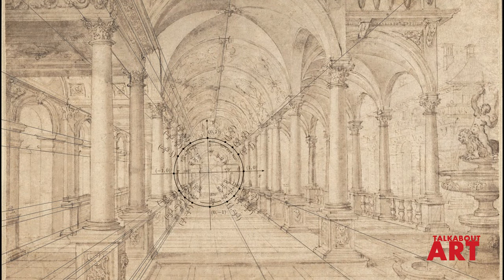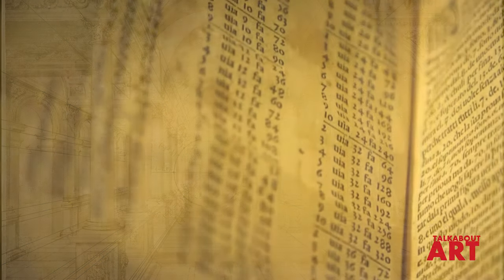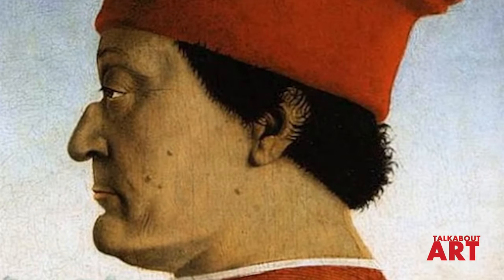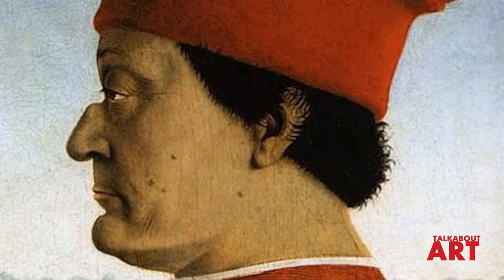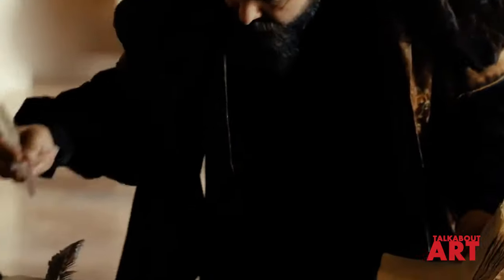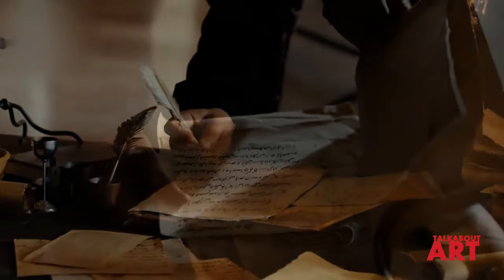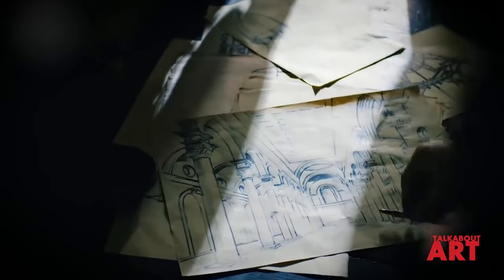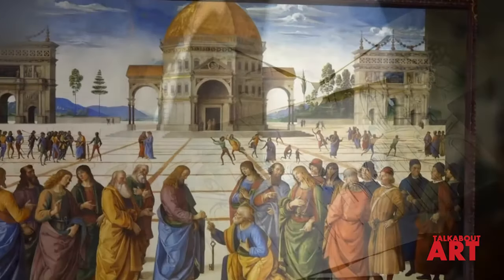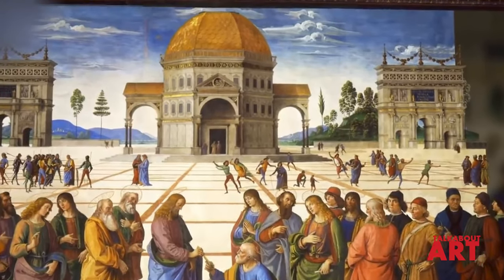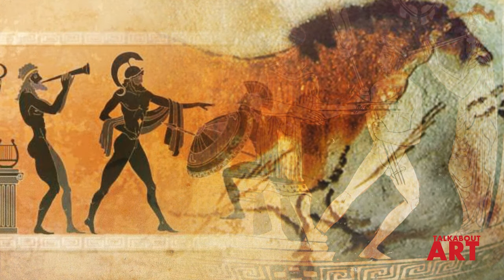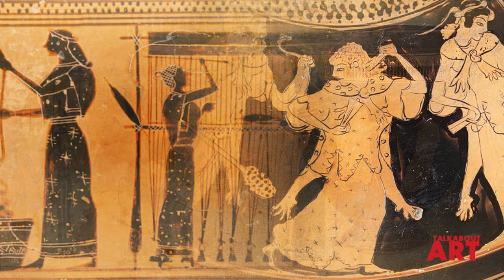Brunelleschi developed a view of perspective to a vanishing point in the early 15th century. His discovery immediately influenced subsequent Renaissance art and was studied simultaneously in manuscripts by Leon Battista Alberti, Piero della Francesca, and others. It is generally believed that systematic attempts to develop a system of perspective began around the fifth century BC. The earliest paintings and drawings usually sized objects and characters hierarchically according to their spiritual or thematic importance.